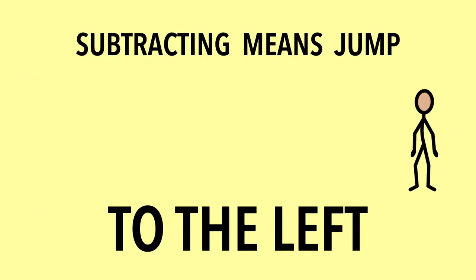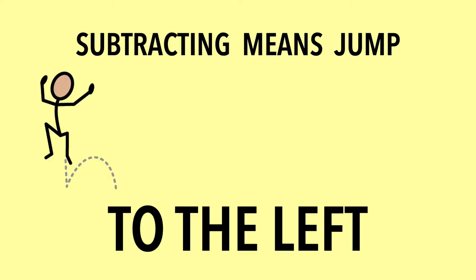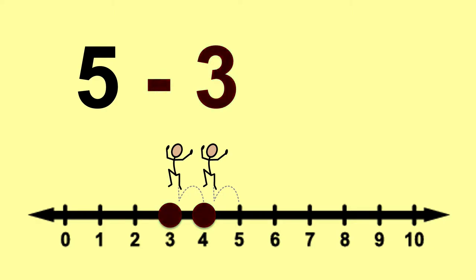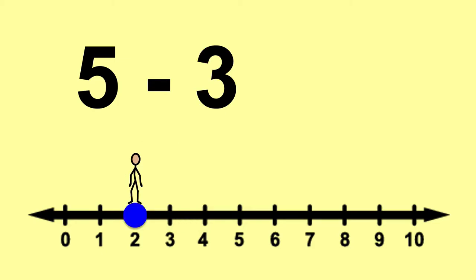This is a follow-up to a project called Adding Means Jump to the Right. In the chorus, the direction left is demonstrated by a stick figure standing and then jumping to the left multiple times. Each subtraction problem has two digits. The first digit is where the stick figure stands to begin. The second digit is the quantity of times the stick figure has to jump, and the number which our stick figure lands on is the solution to the problem.